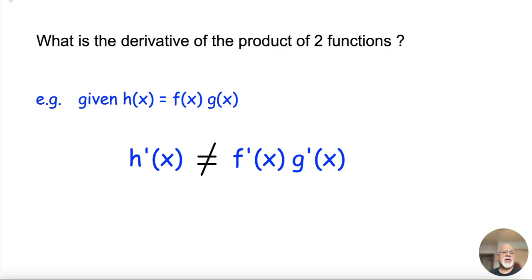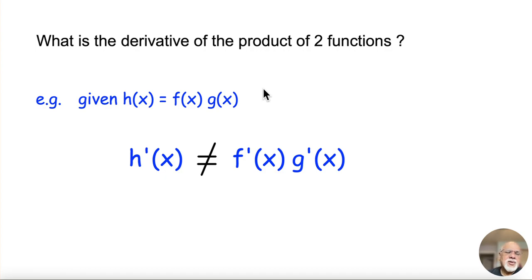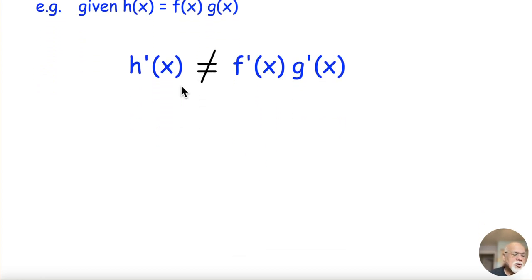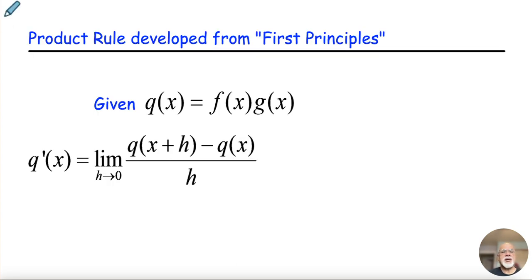Next, how does one handle the derivative of a product of two functions? Given that h of x equals f times g — the product of two functions involving x — what would h prime be? Well, it's not simply f prime of x times g of x. You might instinctively think that, since derivatives are just limits and one of the limit rules says the limit of a product is the product of the limits. But as it turns out, this doesn't work when you go to do the derivative. We're going to calculate h prime from first principles.